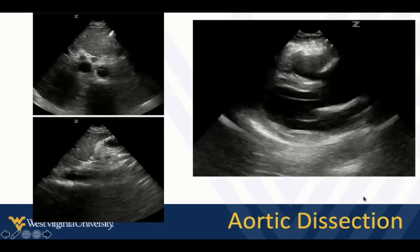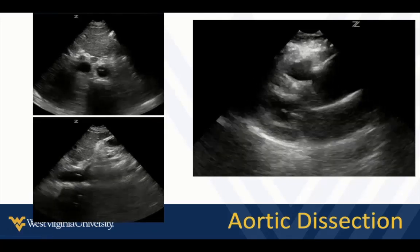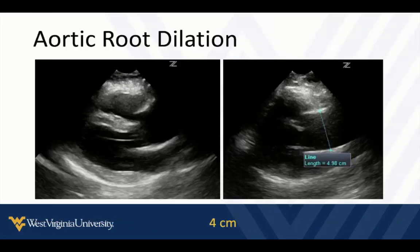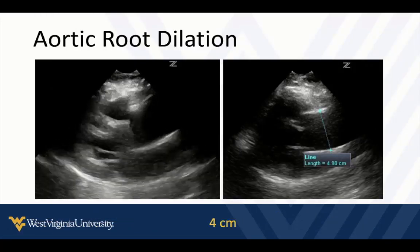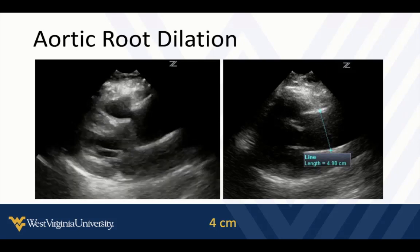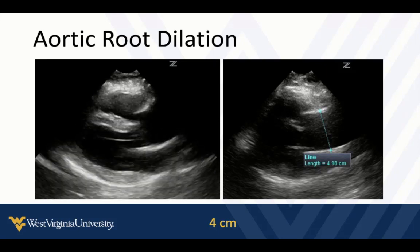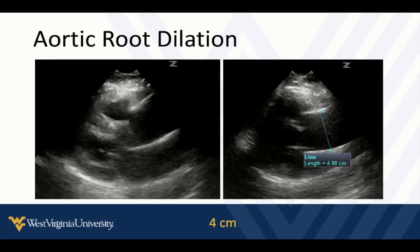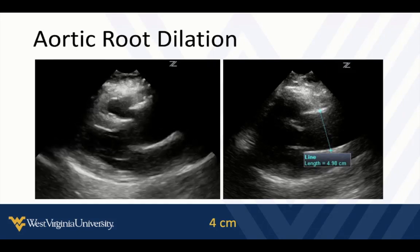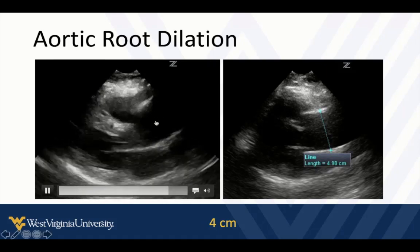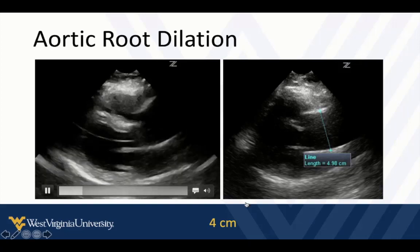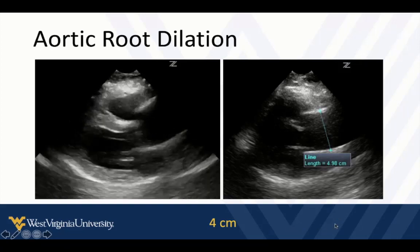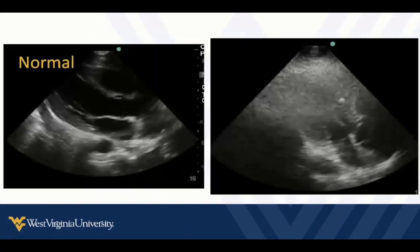High mortality — the longer you wait to make this diagnosis. Aortic root dilation is the most common thing we'll see on echo in aortic dissections, so that's one of the first things to train your eyeballs with. And if you want to measure it, it's more than four centimeters.